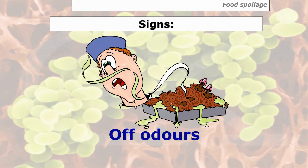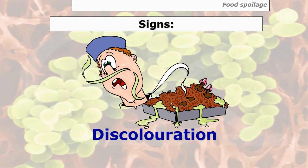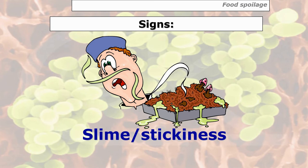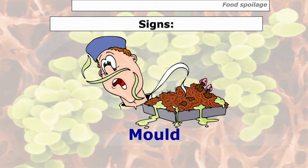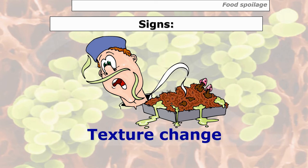Let's look at the signs of food spoilage bacteria. First, off odors — a different smell to the food. Second, discoloration — you may have noticed in supermarkets on the meat counter near the use-by date, the color starts to change: lamb may look a bit green and beef a bit black due to spoilage bacteria. There's also slime or stickiness, and mold growth.